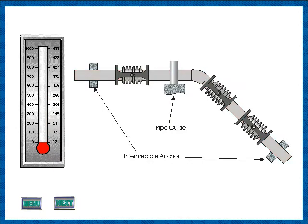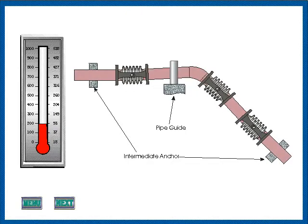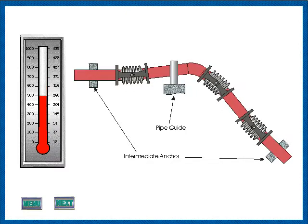This animation illustrates the principle that systems of hinged expansion joints may be used in other than 90 degree bends. Only intermediate anchors and planar guides are required.